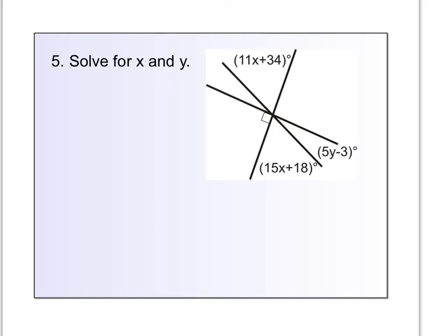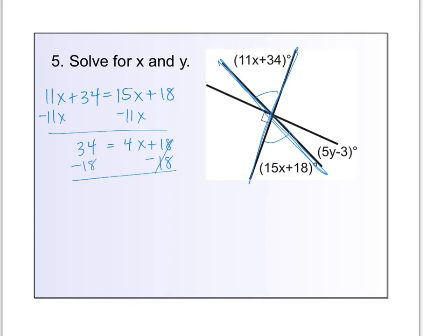One last example. This one says solve for x and y. I think in this case there is one we have to solve for first. I don't think we can start with y. I think we have to start with x in this case. I'm noticing these two angles with the x's in them. If you look closely, if we draw in the x here, those two blue angles are vertical angles, and they should be congruent to each other. So the 11x plus 34 should equal the 15x plus 18. And now I should be able to solve that for x. So let's get our variables together. So I have 34 equals 4x plus 18. Subtract your constant. So subtract the 18. 34 minus 18 is 16. Divide by 4. And x equals 4.